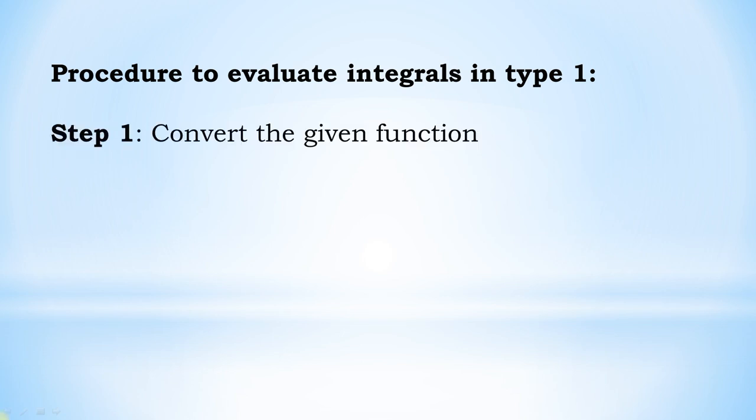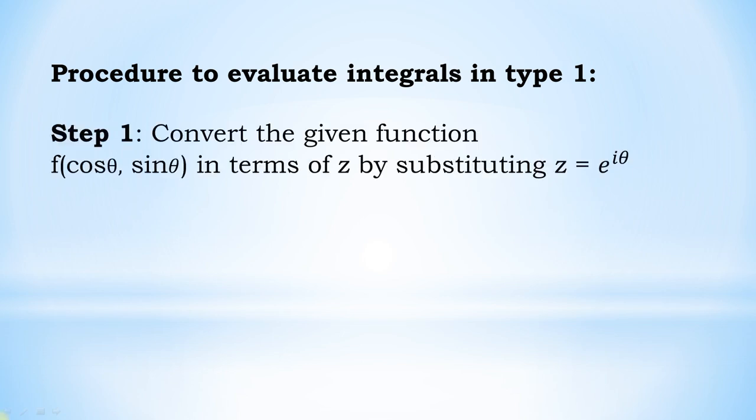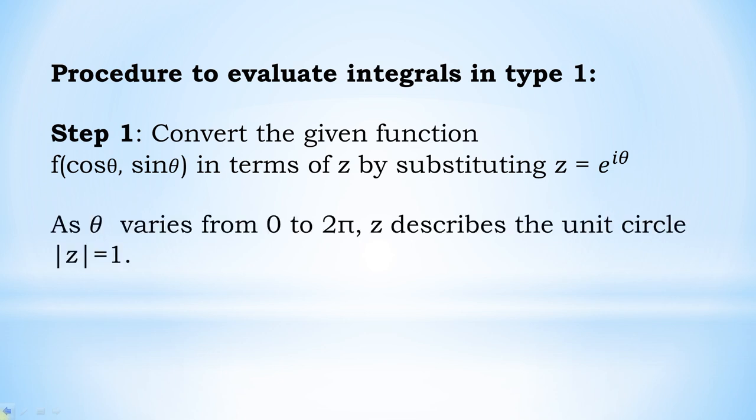Step 1: Convert the given function f(cos θ, sin θ) in terms of z by substituting z = e^(iθ). As θ varies from 0 to 2π, z describes the unit circle |z| = 1.